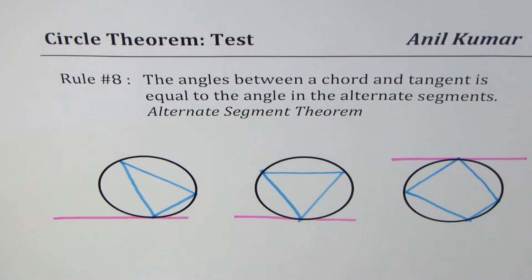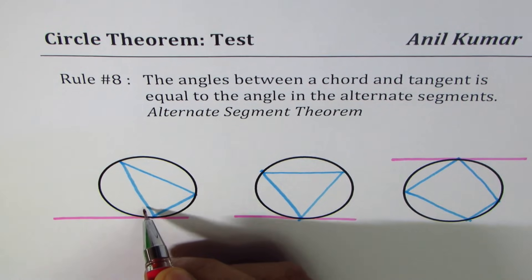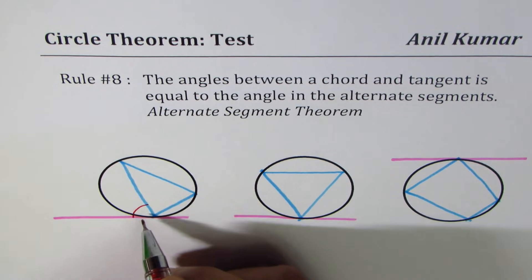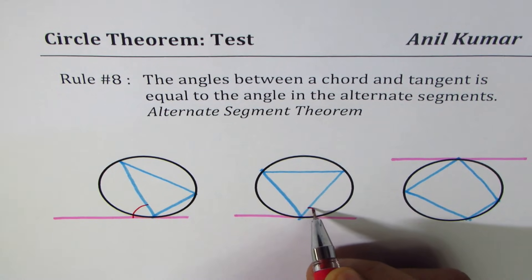Now it's kind of confusing to understand which two angles we're talking about. So what I will do here is use three examples to clarify. We'll look for angles which are equal to these angles. Let me sketch some angles.